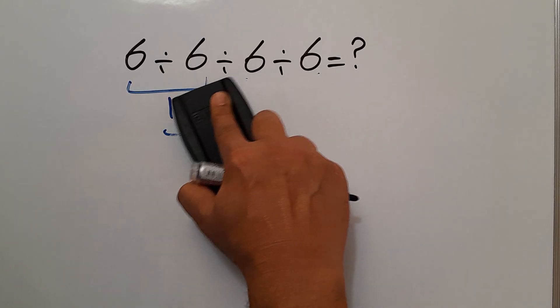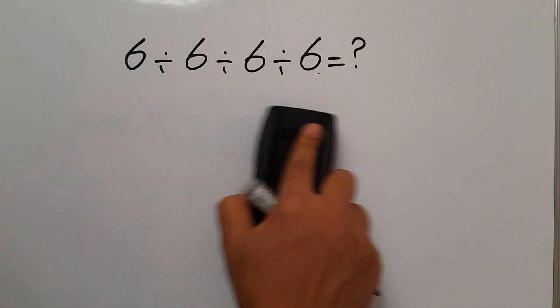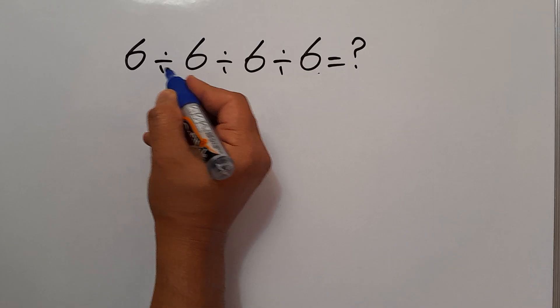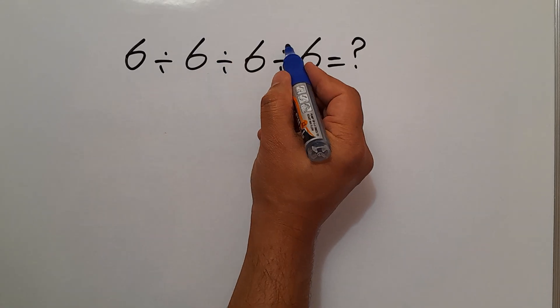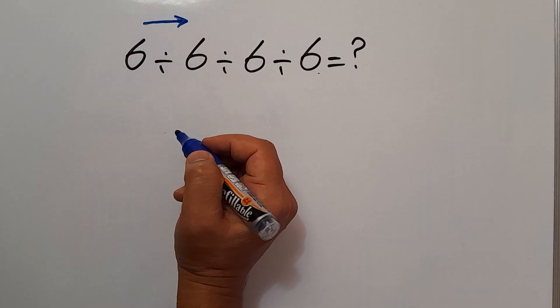Because according to the order of operations, we have to work from left to right. So first this division, then this division, and finally this division. We have to work from left to right.